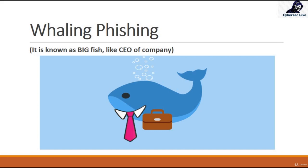In this video we will talk about whaling phishing, which is also known as big fish. In this type of whaling phishing, any attacker directly targets the senior leaders of a company. It is a method used by cyber criminals to masquerade as a senior player at any organization and directly target senior or other important individuals, with the aim of stealing money or sensitive information or gaining access to their computer systems for criminal purposes. It is also known as CEO fraud.